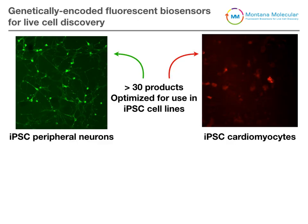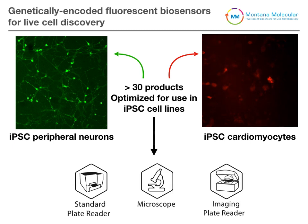We've spent a great deal of time optimizing our sensors to be used in iPSC-derived cell types, including peripheral neurons on the left and cardiomyocytes on the right. Importantly, all of our sensors can be used in a number of different assays, including those based on plate readers, those based on imaging, or even high-content analysis.